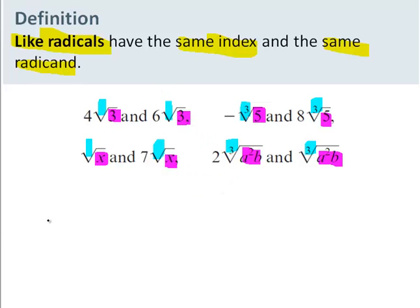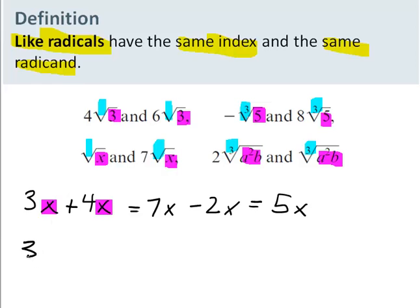You've actually worked with something similar to this in the past when you combine variables. So if I have 3x and 4x, they have different coefficients, but the variables are the same. And if the variables are the same, I can add them, or I can subtract them. I cannot do this. That expression is complete. I can't simplify it.